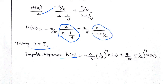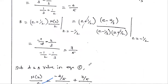Plus (7/5) times the inverse Z-transform of z/(z + 1/2). Since z + 1/2 can be written as z − (−1/2), the inverse Z-transform is (−1/2)^n · u(n).